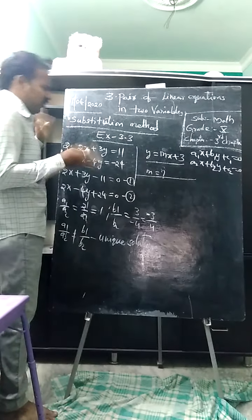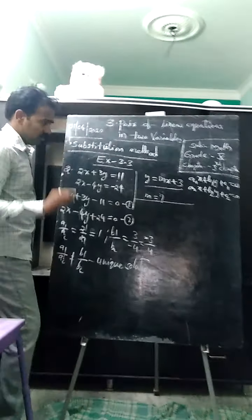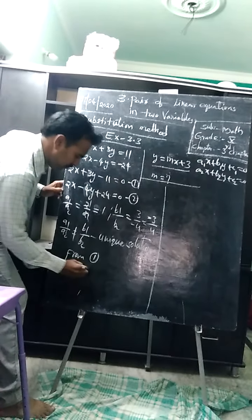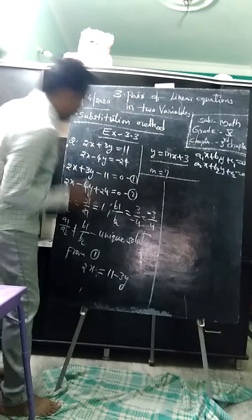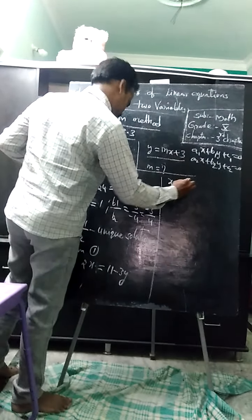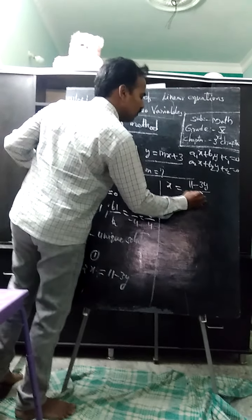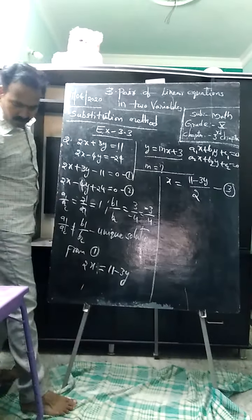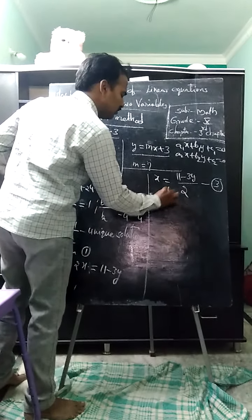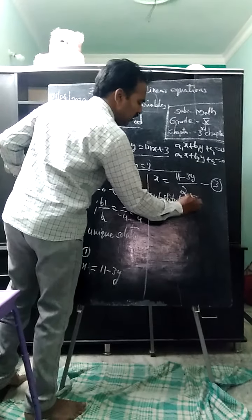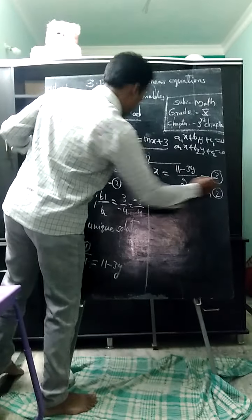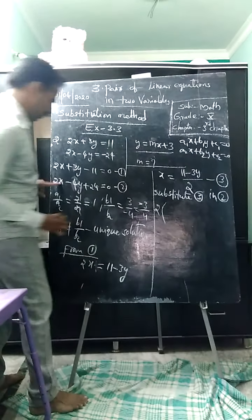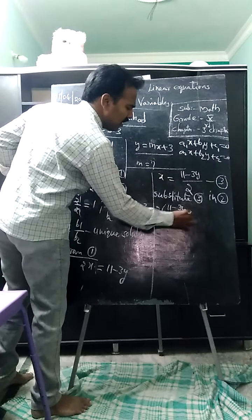From equation 1, I will express x. As we know, the 3y term can be moved: x equals 11 minus 3y, all divided by 2. This becomes equation 3. Now substitute equation 3 into equation 2. After putting x equals 11 minus 3y by 2 into equation 2, we get: 11 minus 3y by 2, minus 4y, equals minus 24.